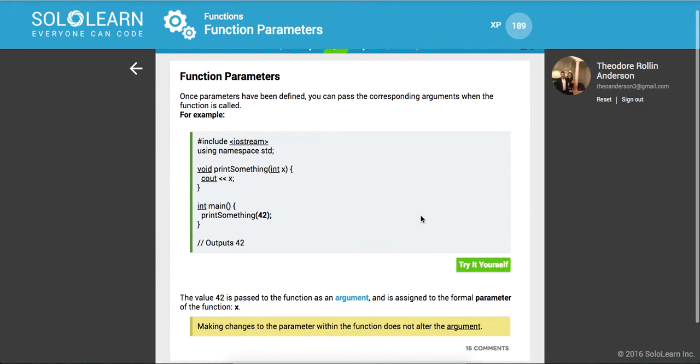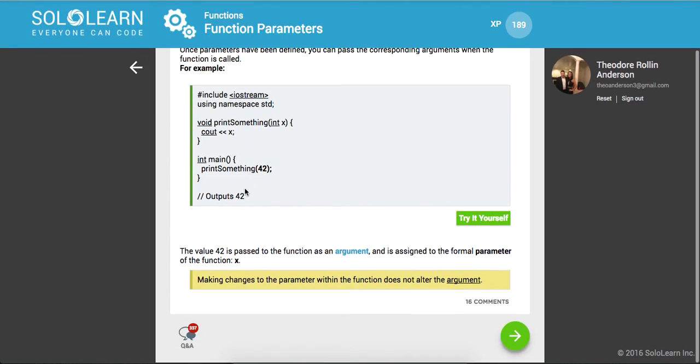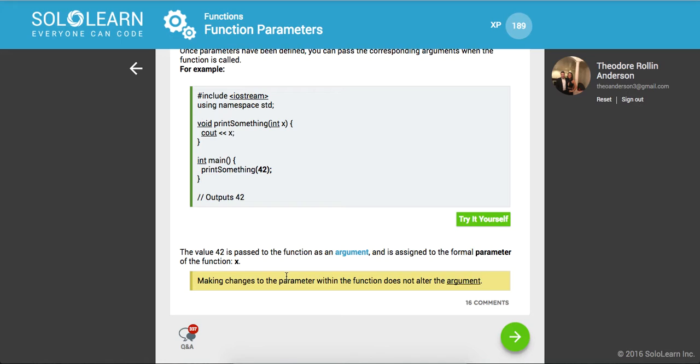Awesome. So once parameters have been defined, you can pass the corresponding arguments when the function is called. When this is called, we're gonna pass 42 to print something and then it's gonna print it out. So the value 42 passed to the function as an argument is assigned to the formal parameter of X. Making changes to the parameter within the function does not alter the argument.